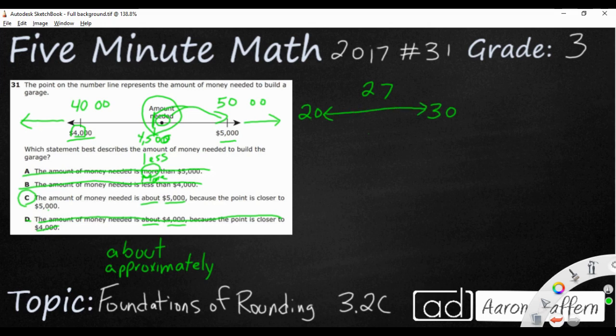So 27 falls between 20 and 30 if we're looking at a number line. And then if we have our midpoint, it's always good to know what the midpoint is—25. Where would 27 fall? Well, 27 would fall right about there, between 25 and 30, which means it would round up to 30 because it's closer to 30 than to 20.